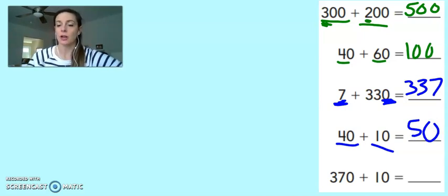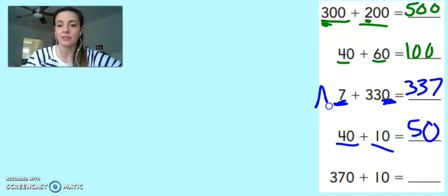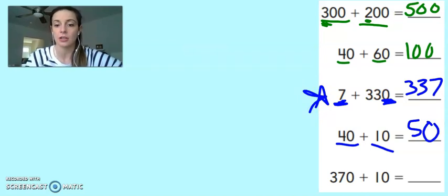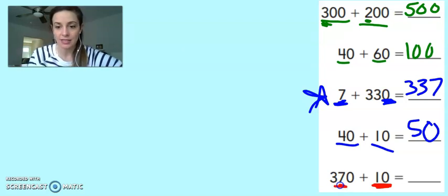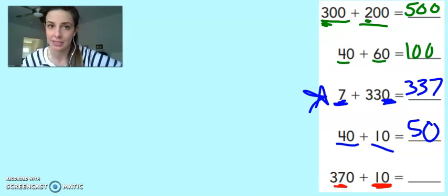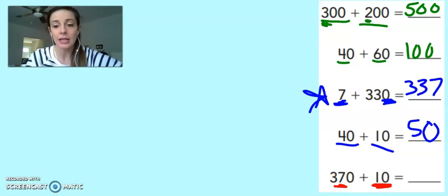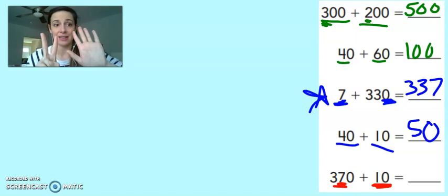And the last one is another one of those kind of like this one right up here. Let's take a look. I have 370 plus 10. Now since I'm dealing with a 10, I'm going to look at the tens place. Now on 370, that's where that 7 is. Right now in 370, I have 7 tens.